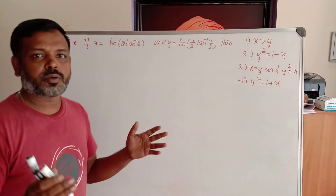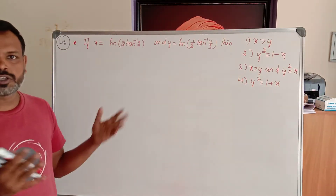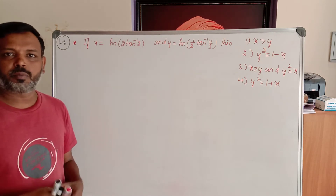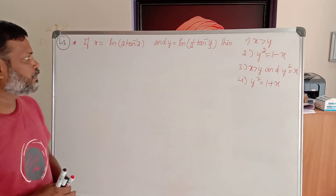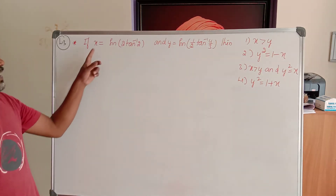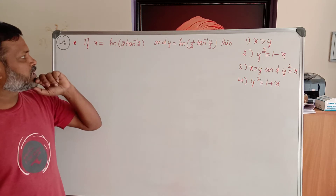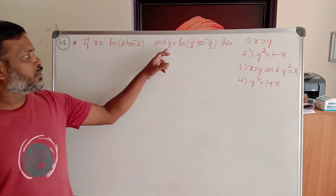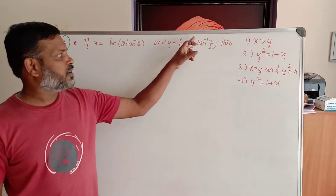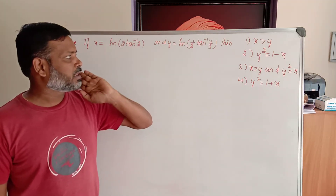Students, observe this very important question. If x is equal to sin of 2 tan inverse 2, and y is equal to sin of tan inverse of 4 by 3, then what is the relation between x and y? The options are given.